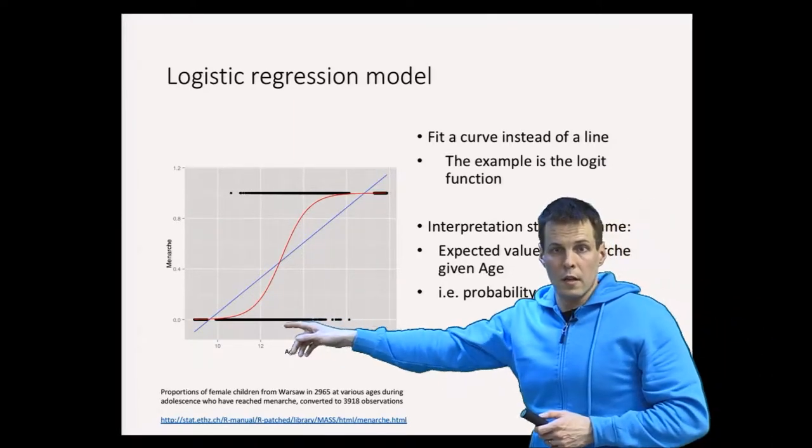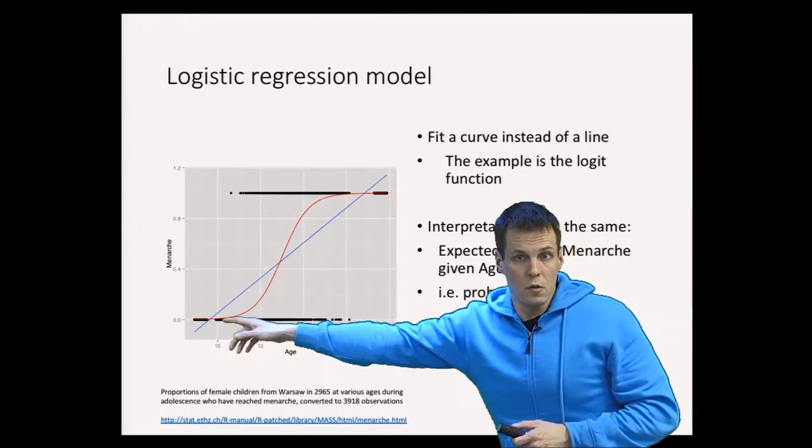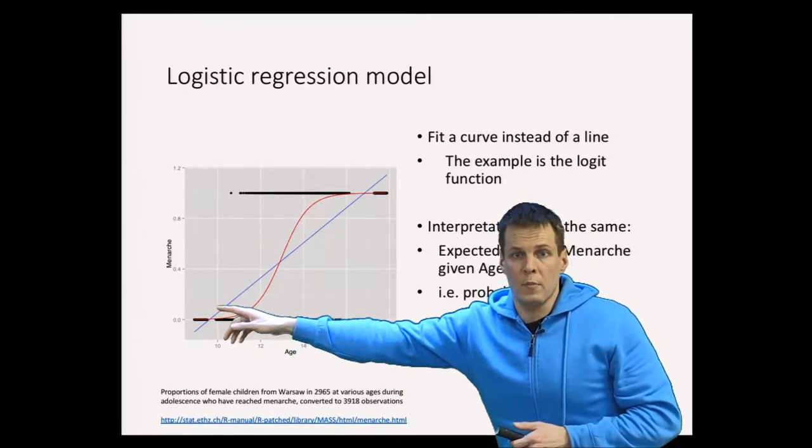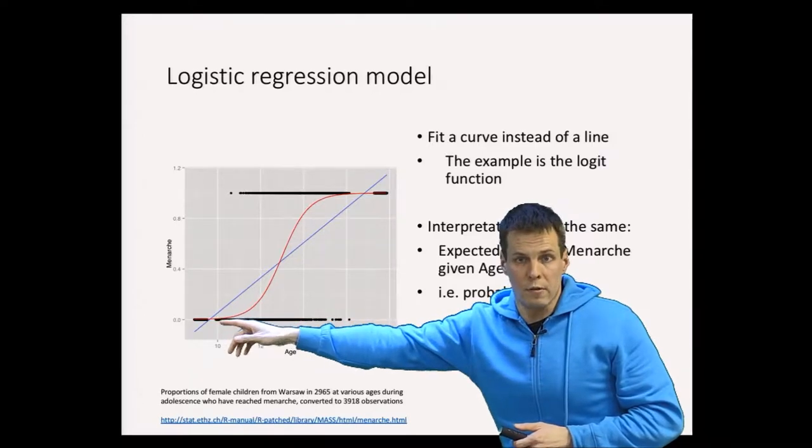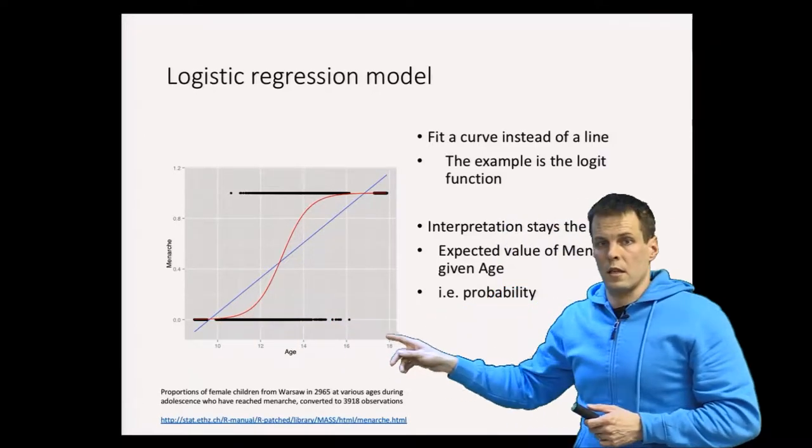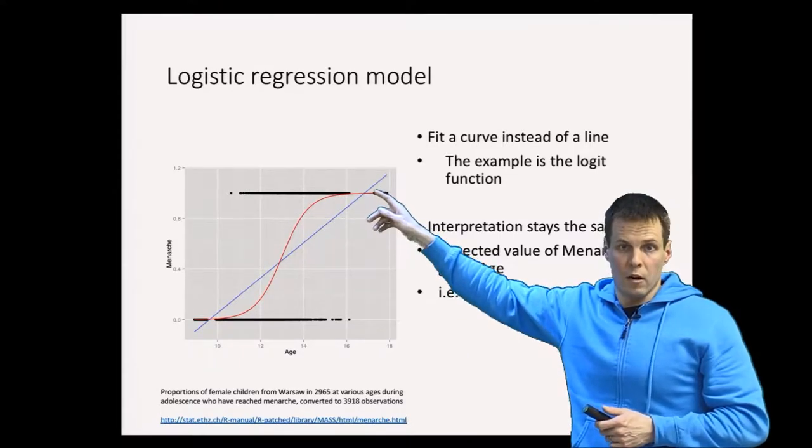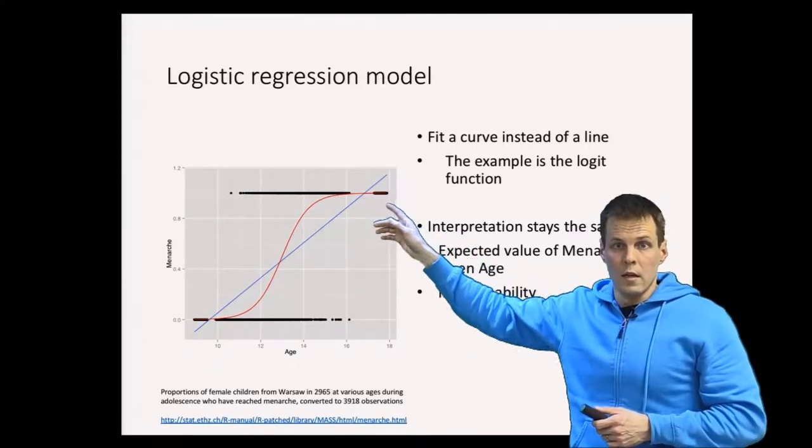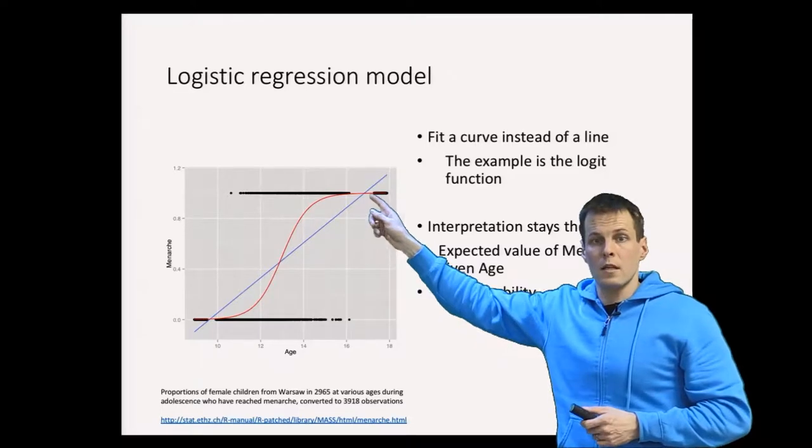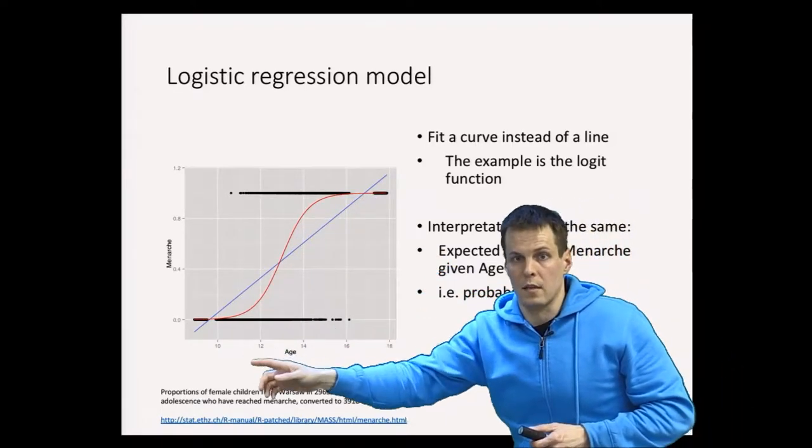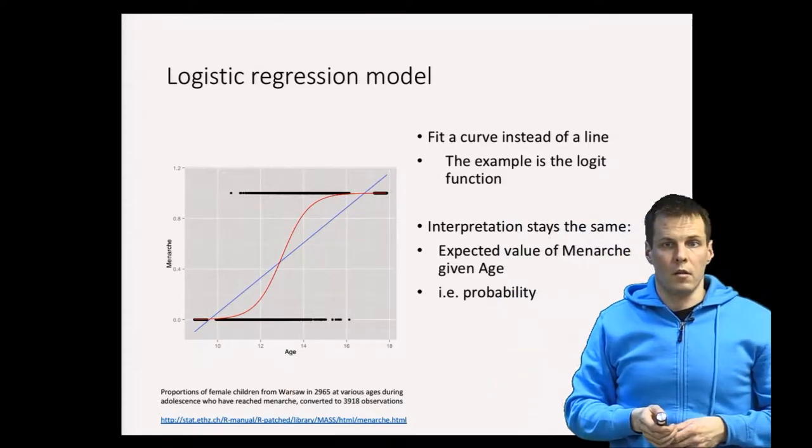We can see that when the girl's age is close to 10, which is the minimum in the sample, the predicted probability of menarche is about zero. When the girl is 18, which is about the maximum of the sample, the predicted probability of menarche is about one. We want to estimate this logistic curve and how it tells us the relationship between age and menarche.